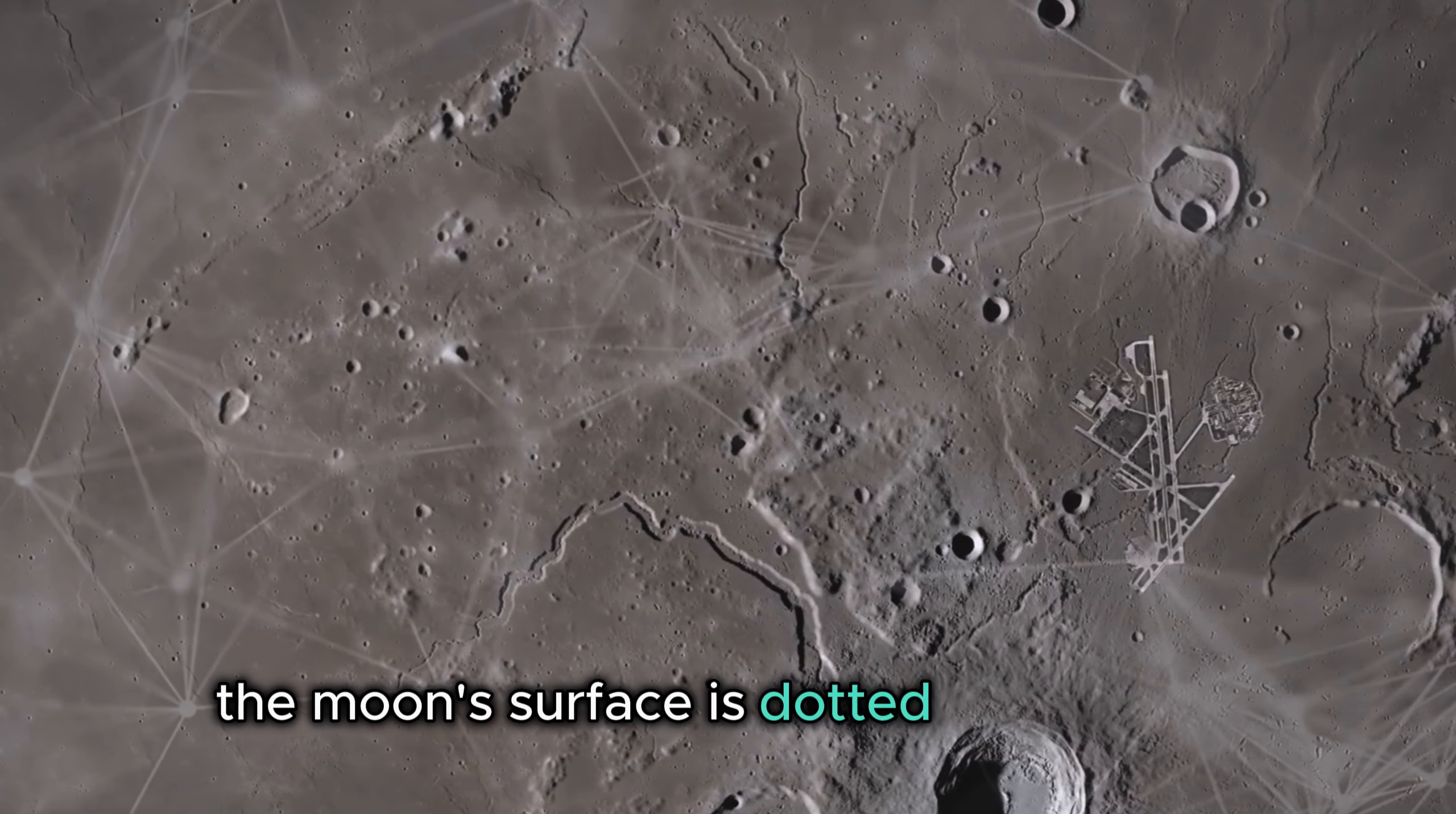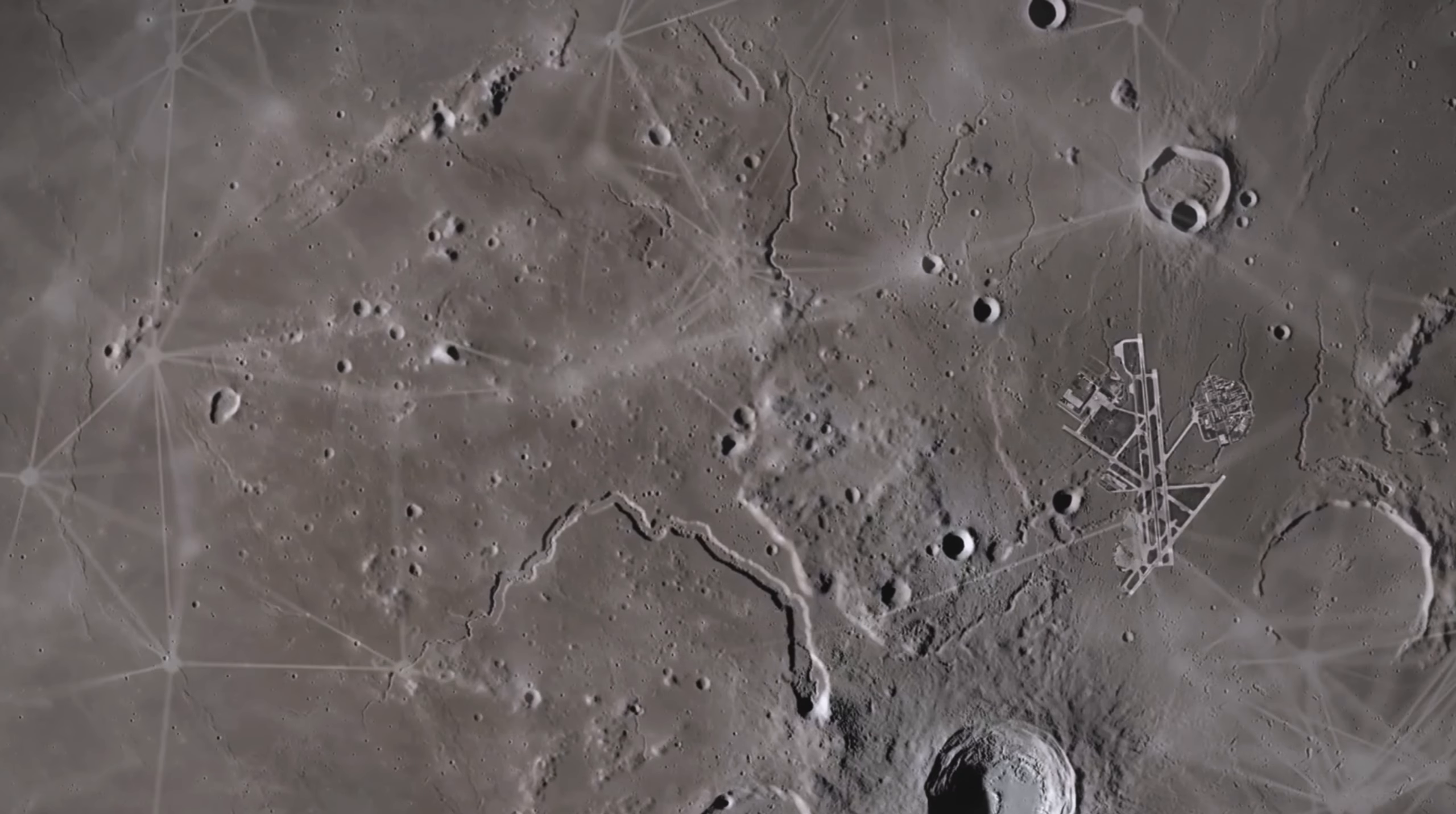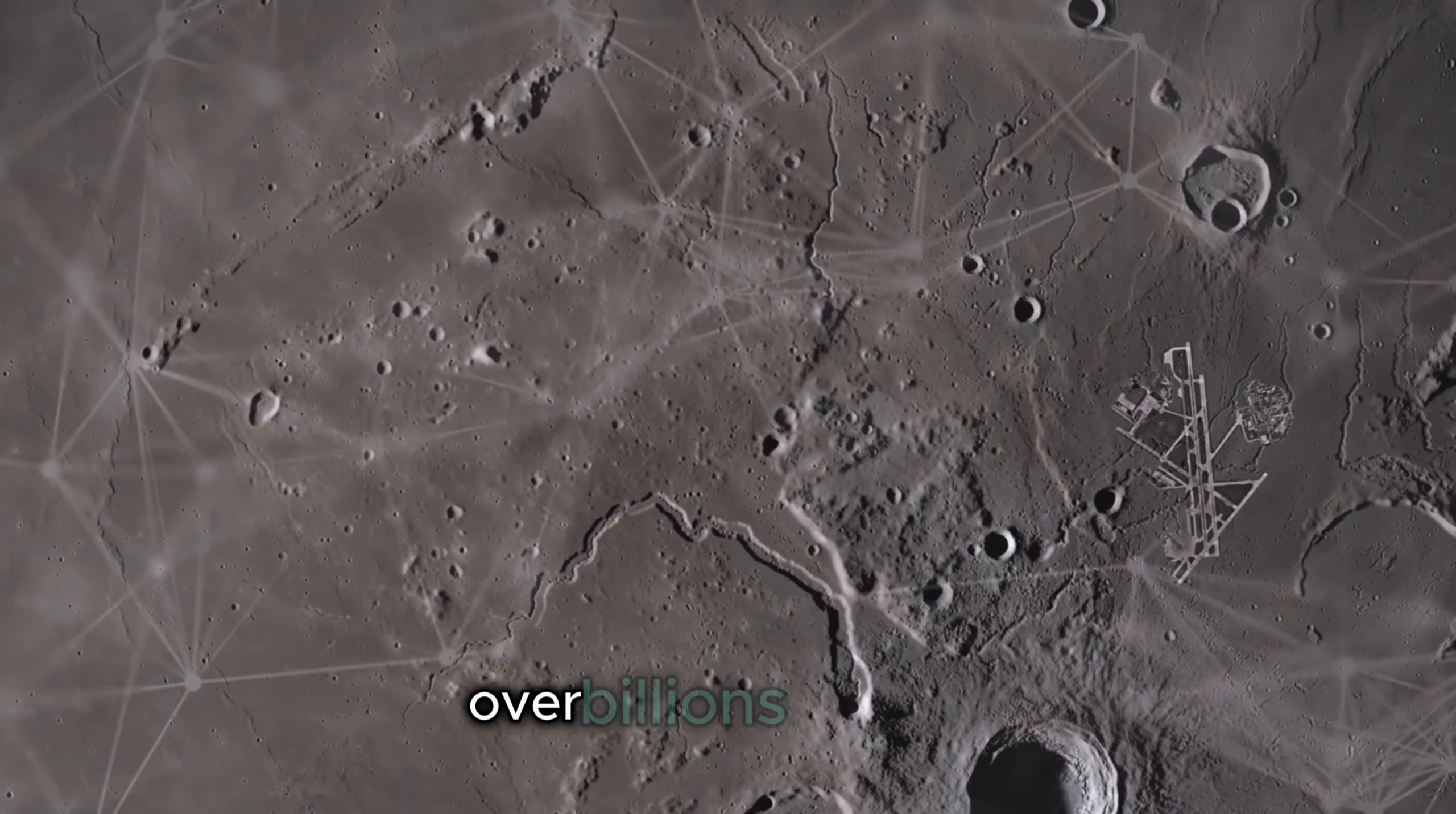The Moon's surface is dotted with craters from countless cosmic collisions, each one telling a story of a violent past. These craters, formed by meteoroid impacts, have shaped the Moon's rugged landscape over billions of years.